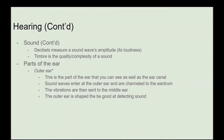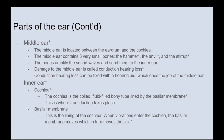When talking about hearing, we want to know the parts of the ear. The outer ear is the part you can see, as well as the ear canal. Sound waves enter at the outer ear and are channeled to the eardrum, and the vibrations are sent to the middle ear. The middle ear is located between the eardrum and the cochlea and contains three very small bones: the hammer, the anvil, and the stirrup. A good mnemonic is 'HAS' — the middle ear HAS three bones: Hammer, Anvil, Stirrup. The bones amplify sound waves and send them to the inner ear. Damage to the middle ear is called conduction hearing loss, which can be fixed with a hearing aid.